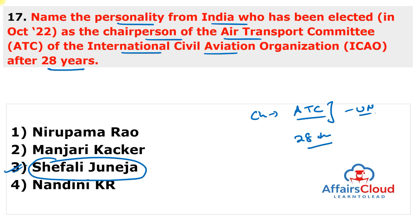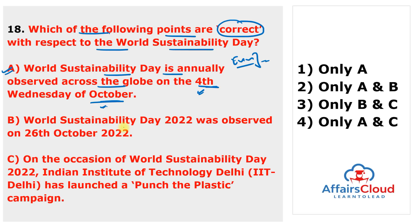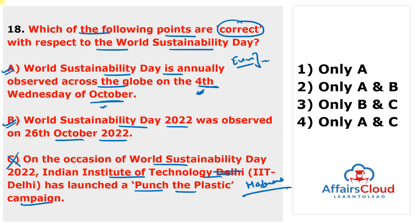Next question: which of the following statements are correct regarding World Sustainability Day? Statement A: World Sustainability Day is annually observed on the fourth Wednesday of October — true. Statement B: World Sustainability Day 2022 was observed on 26th October 2022 as it was the fourth Wednesday — true. Statement C: IIT Delhi launched the Punch the Plastic campaign on this occasion — false, it was IIT Madras in Chennai, Tamil Nadu. Only statements A and B are correct, so the answer is second option.